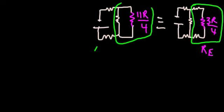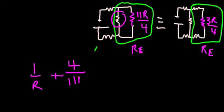We now have two parallel resistors, which we can replace with an equivalent resistance of 1 over R plus 1 over 11R over four, which works out to be 4 over 11R. So we can now add those two using fraction addition, finding a common denominator of 11R. It gives us 15 over 11R.